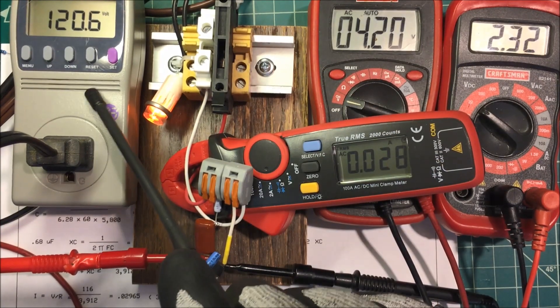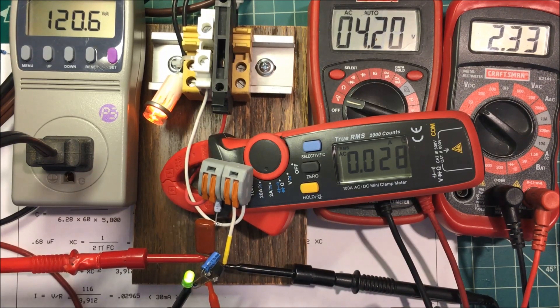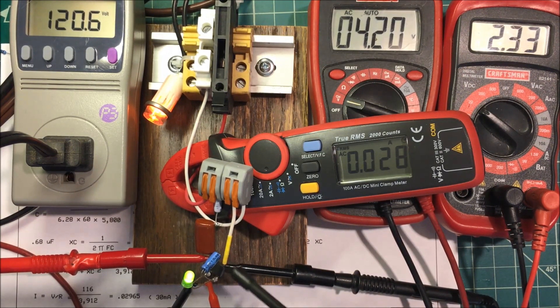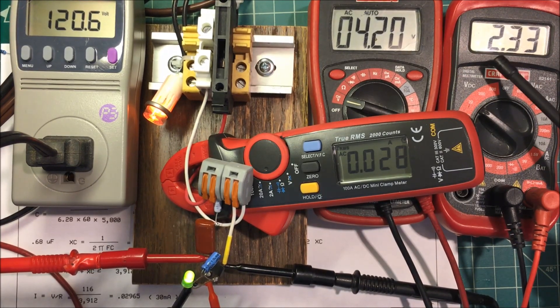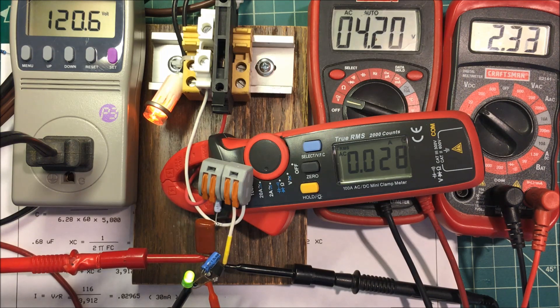All right, I've got 120 volts coming in, 28 milliamps on the AC side, 4.2 volts on the AC side of the rectifier, and 2.3 volts across the LED. Looks like the math worked out pretty good.